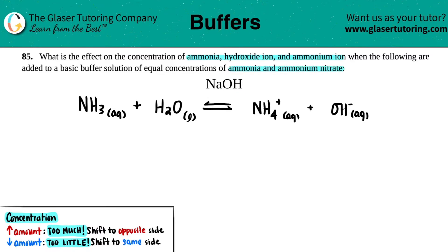NaOH should be ringing a bell, because NaOH is one of our six strong bases. So I'll just put Sb. And if NaOH is a strong base, that means that it's going to dissociate 100% into its ions. And the ion split is right where the metal is.